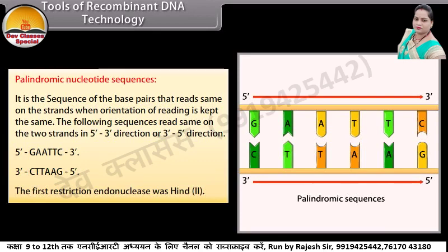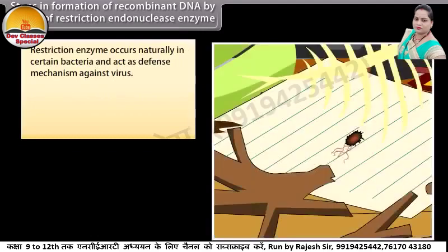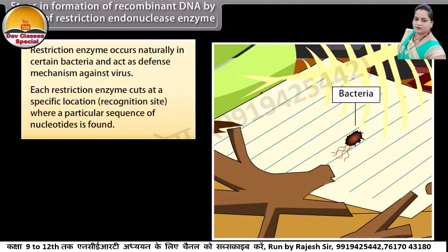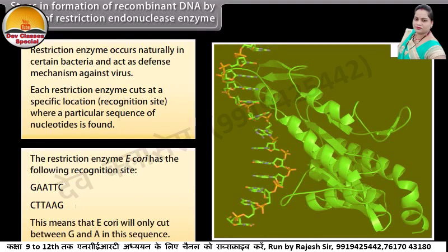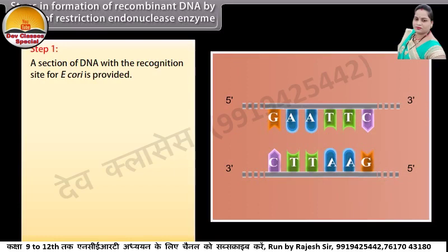The first restriction endonuclease was HindII. Steps in formation of recombinant DNA by action of restriction endonuclease enzyme. Restriction enzymes occur naturally in certain bacteria and act as a defense mechanism against viruses. Each restriction enzyme cuts at a specific location — the recognition site — where a particular sequence of nucleotides is found. The restriction enzyme EcoRI has the following recognition site: 5'-GAATTC-3' / 3'-CTTAAG-5'. This means that EcoRI will only cut between G and A in this sequence. Step 1: a section of DNA with a recognition site for EcoRI is provided.